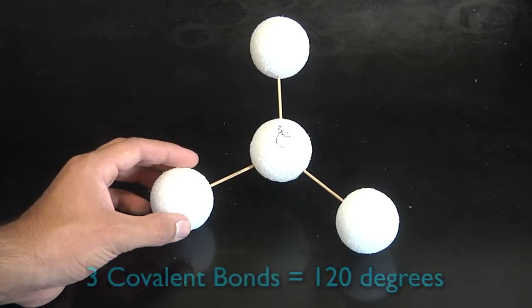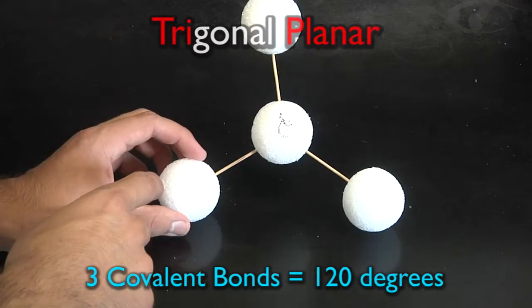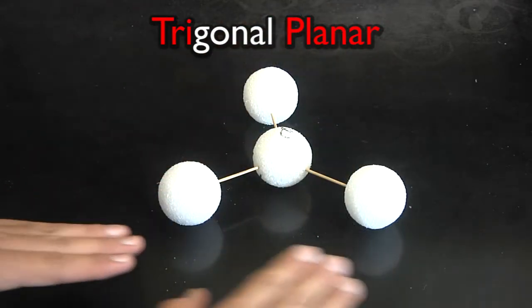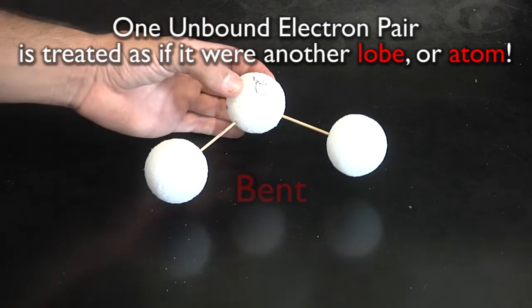Now, a molecule with three bonds would be called trigonal planar. Tri for having three and planar because it can lie on the same plane. Now, if this was a pair of electrons, it would look kind of like this. It would be called a bent molecule.